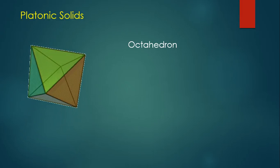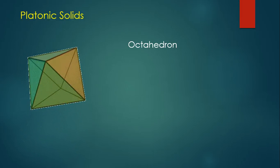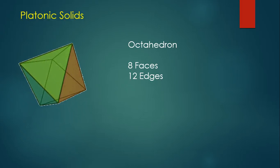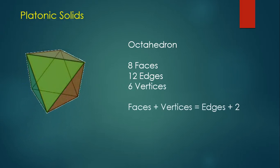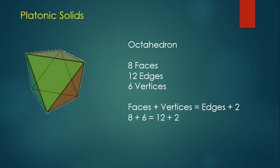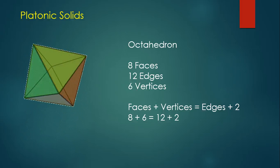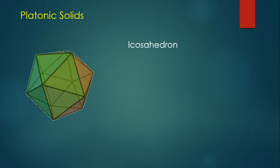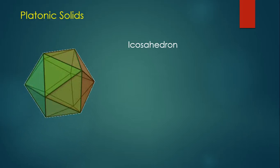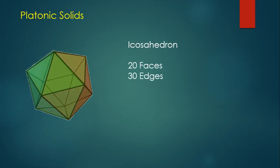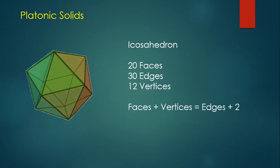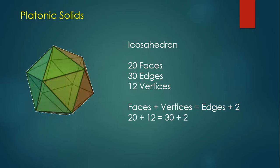The second platonic solid made up of equilateral triangle faces is the octahedron. It has eight faces, 12 edges, and six vertices, and Euler's formula is verified for the octahedron as well. The third platonic solid with equilateral triangle faces is the icosahedron. It has 20 faces, 30 edges, and 12 vertices, and verifying with Euler's theorem shows us that 20 plus 12 does equal 30 plus 2.